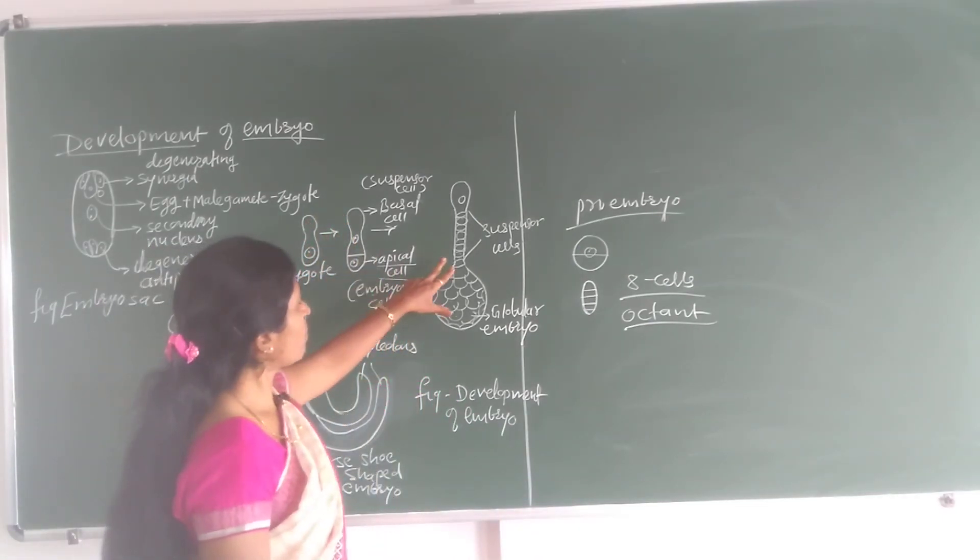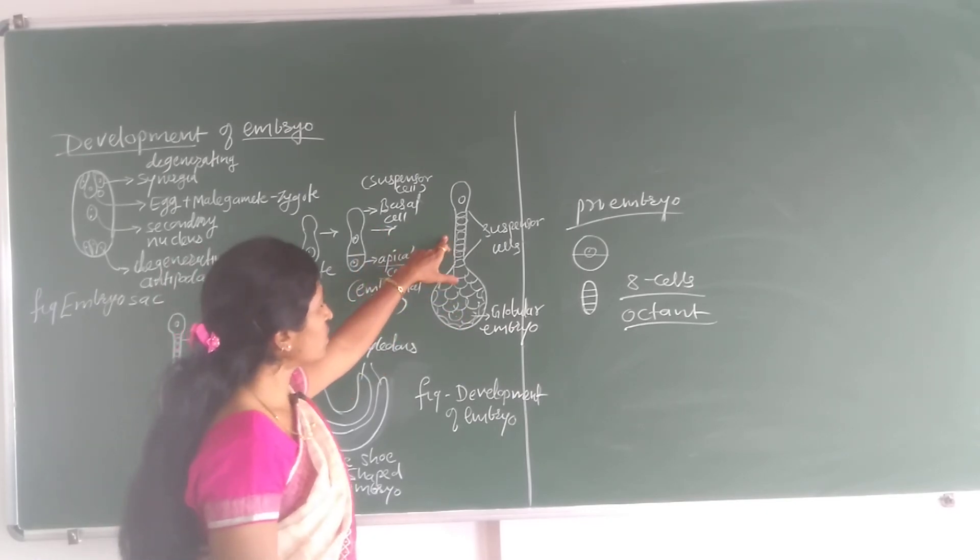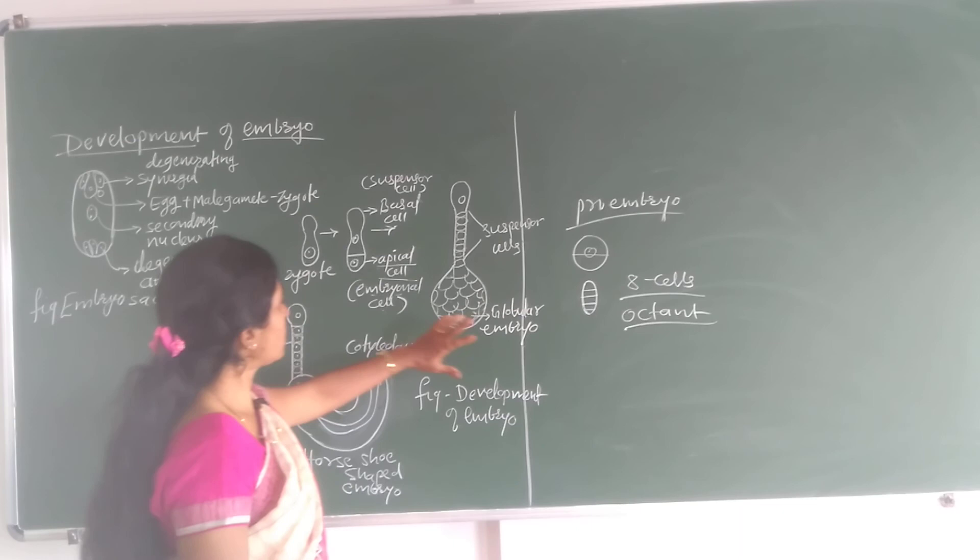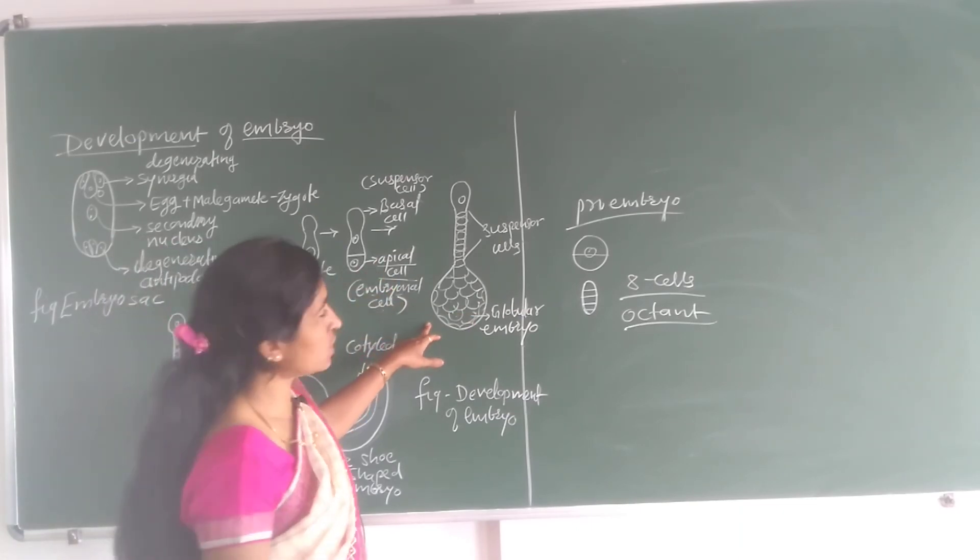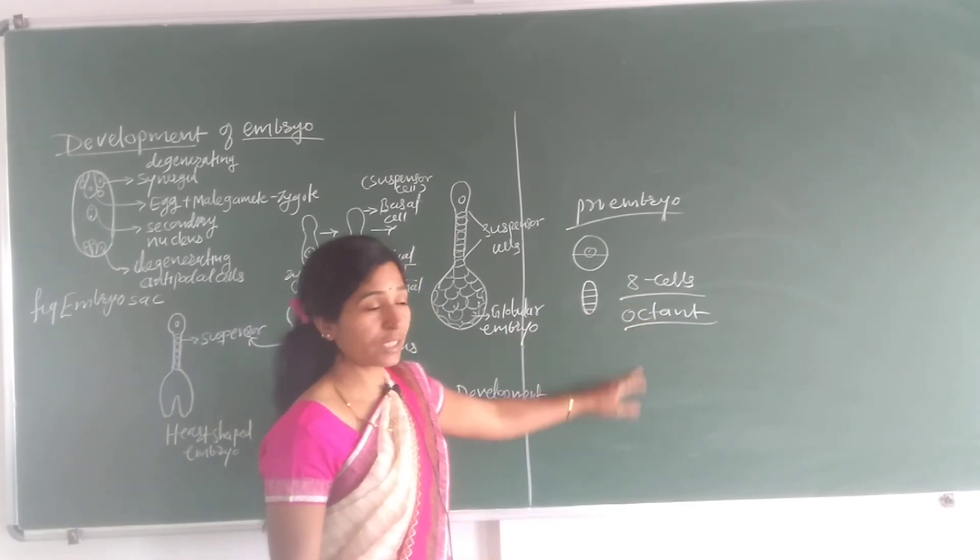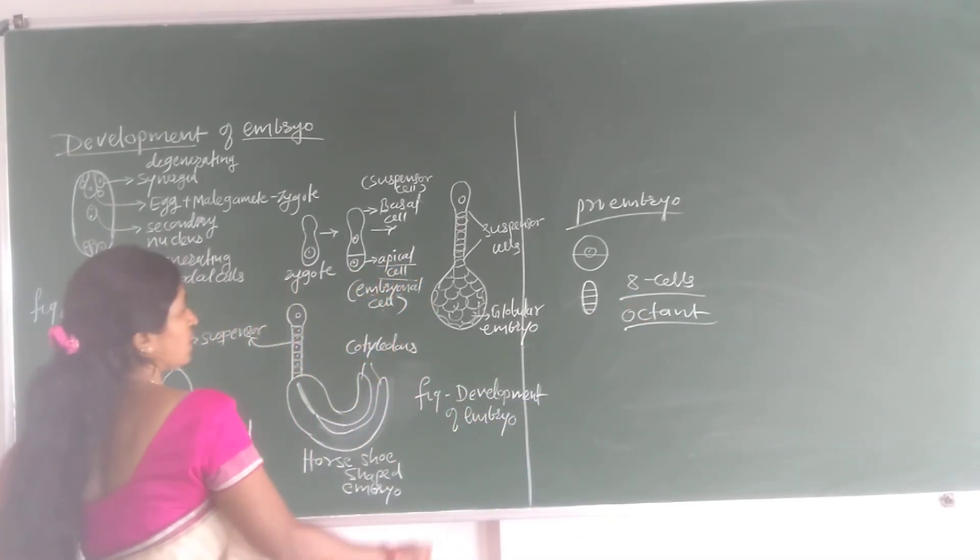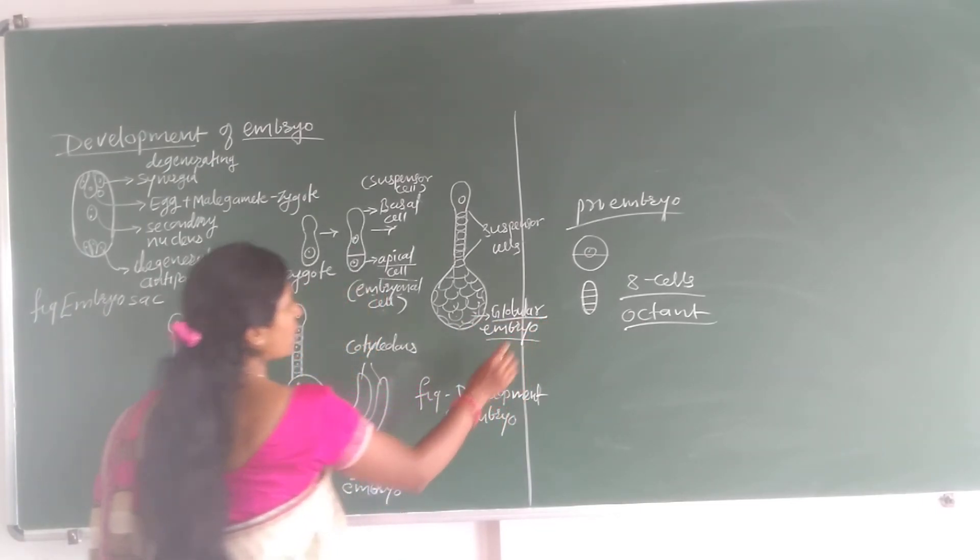Then this proembryo, the basal cell undergoes repeated transverse division for suspensor cells. Apical cell undergoes repeated transverse and vertical divisions to form eight cells. Then this stage is called octant stage and this octant stage is looking just like a globular mass of cells. This is globular embryo.